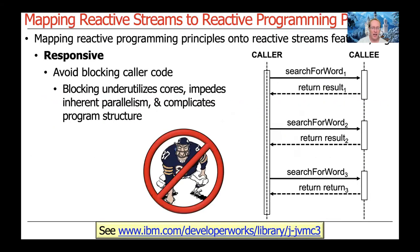This should look familiar — it's actually very similar in some ways to our discussion of completable futures, though the mechanisms differ somewhat. One of the key concepts to achieve responsiveness is not to block the calling thread. Blocking has limitations: you underutilize cores, you impede parallelism, and you complicate program structure. You can learn more about that at the link below.